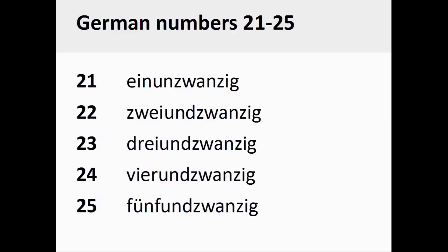The German numbers 21 through 25, however, are interesting. They are pronounced einundzwanzig, zweiundzwanzig, dreiundzwanzig, vierundzwanzig, fünfundzwanzig.